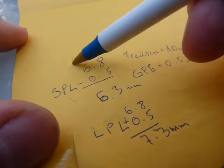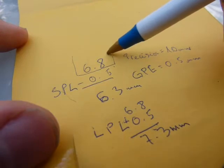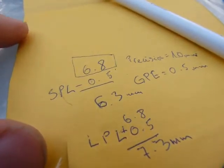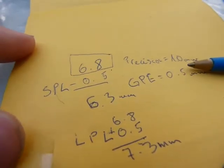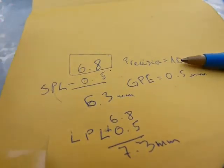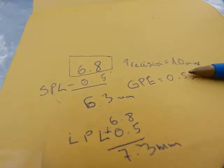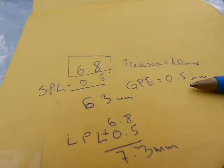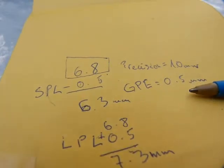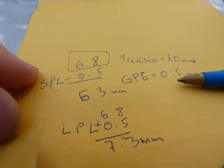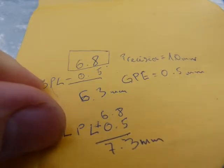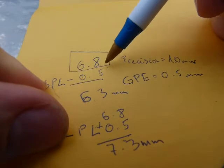So the original measurement that was taken by somebody on an item that you've never seen is 6.8. And if it was taken with a scale or with an instrument that has a measurement scale with a precision of 1 mm, your greatest possible error is always half your precision. And therefore, this is how you can work out the shortest possible length and the longest possible length by not having the actual object in your hand.